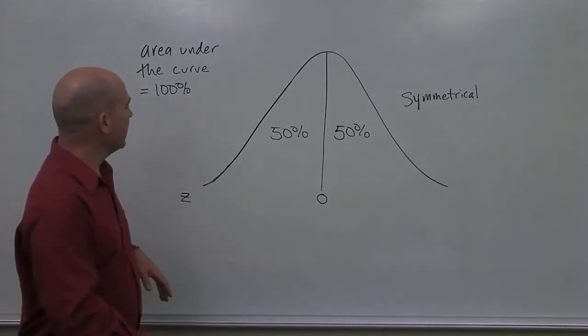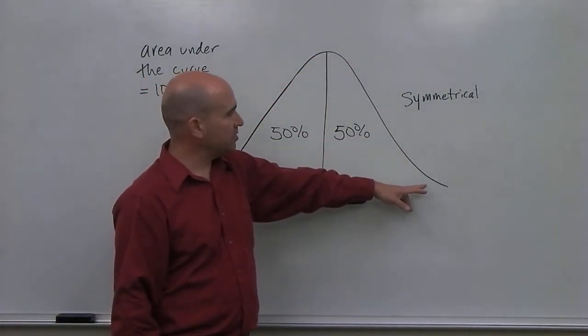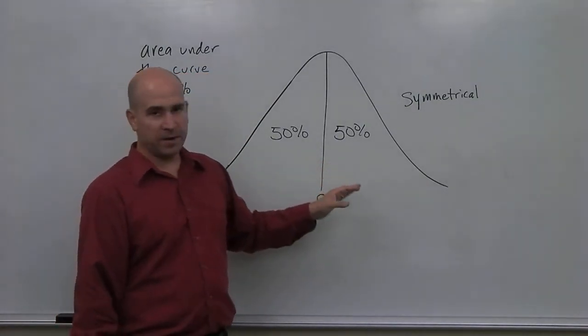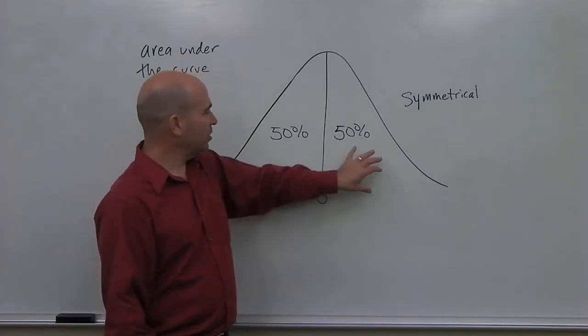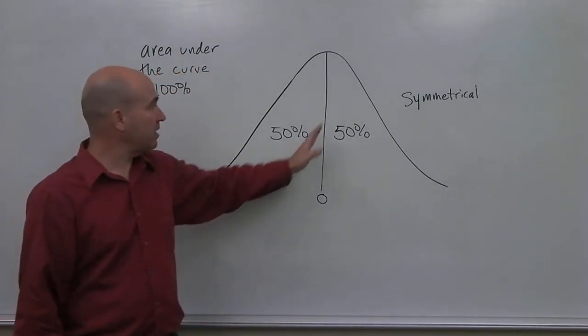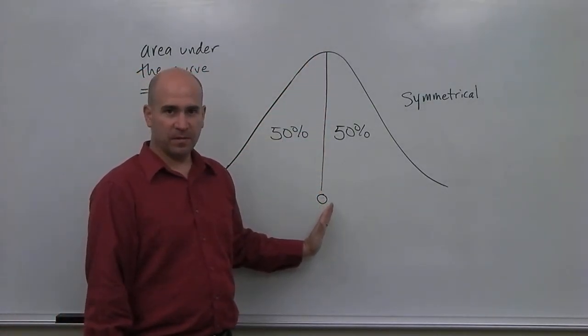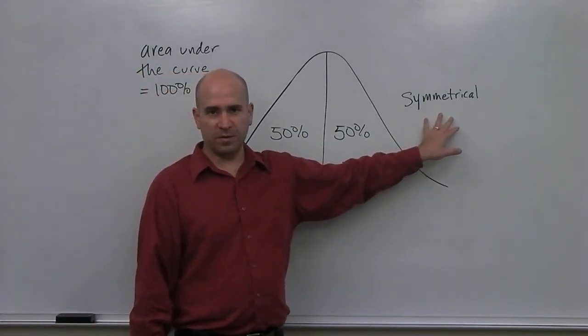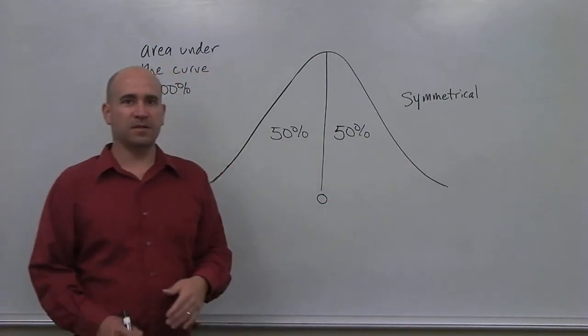So in review, our bell-shaped curve, or normal distribution, can be defined as its area under the curve is 100% total, with 50% on each side of the mean. Now, the reason for that is, once again, is because the normal distribution or bell-shaped curve is symmetrical.